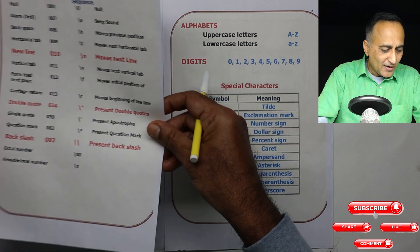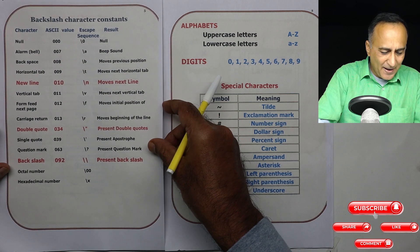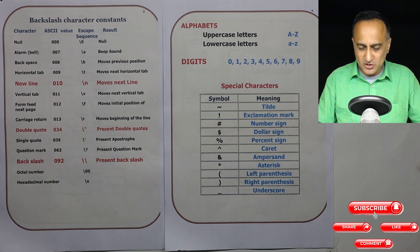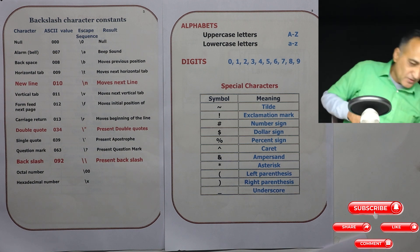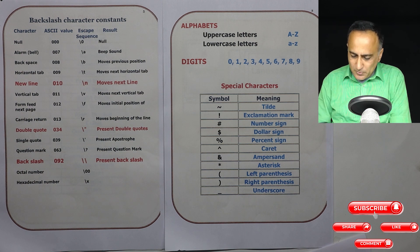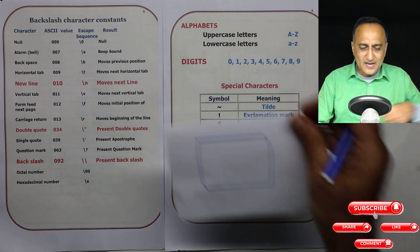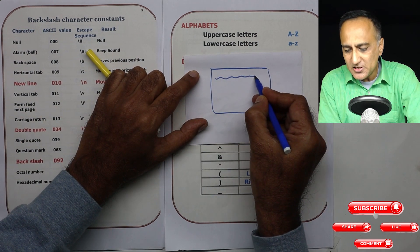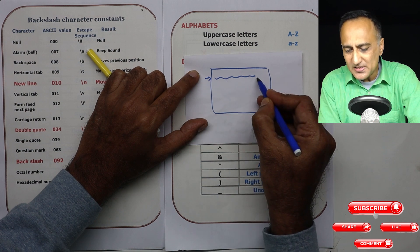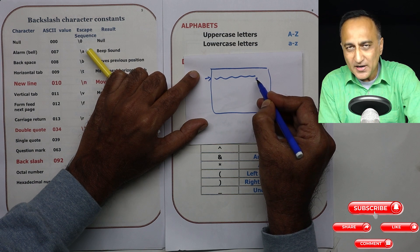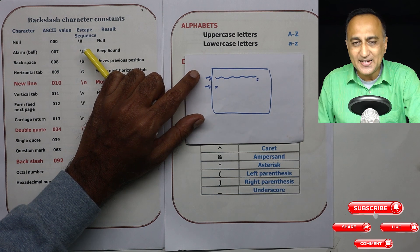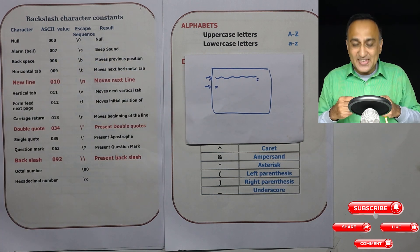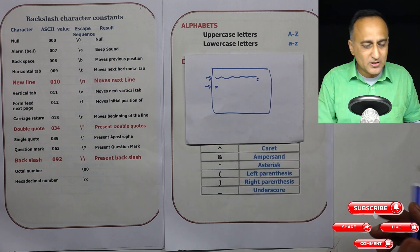So far we have used the backslash n. To give you an understanding of what backslash n means, let me take a simple example. Suppose this is your screen and you are printing a message on a particular line. After printing the message, your cursor stops there. When a C printf statement encounters the backslash n, the cursor is brought to the beginning of the next line. So backslash n is an example of an invisible character which brings your cursor to the next line.